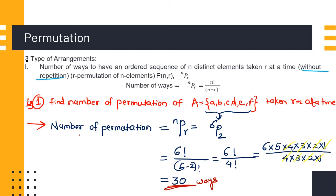According to the first type, the number of permutations will be nPr = 6P2, calculated as 6 factorial divided by (6 minus 2) factorial, which is 6 factorial divided by 4 factorial. That gives us 6 × 5 × 4 × 3 × 2 × 1 divided by 4 × 3 × 2 × 1, and after canceling common terms we are left with 6 × 5.